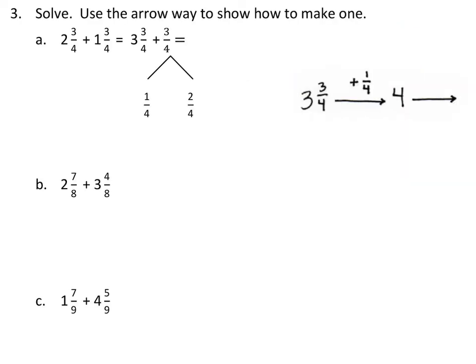Solve using the arrow way to show how to make 1. Now, this way is a little new, and with some practice, I think a lot of students will like this one. But today, it might catch you off a little bit difficult. See, it starts the same way. 2 and 1 make 3. But the 3/4 and the 3/4 stay separated. And the goal is to make the 3/4, this first one, a whole.